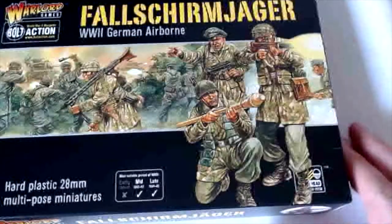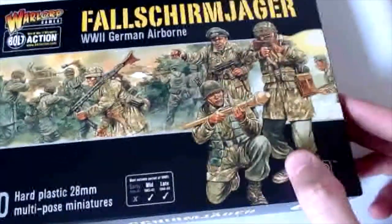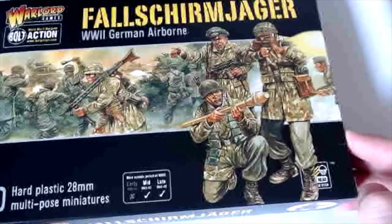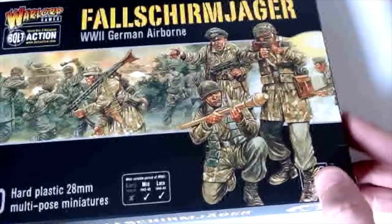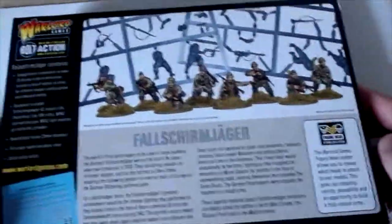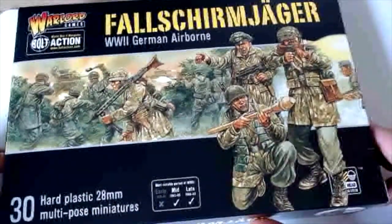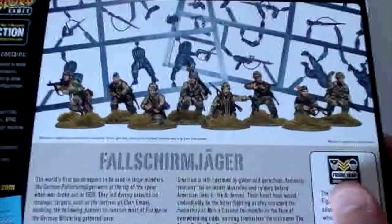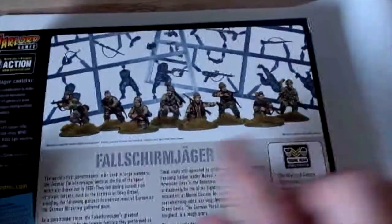Let's get in and start looking at the plastics. The price for these is 27 pounds for 30 miniatures, less than a pound per miniature. Awesome deal. So let's get the cellophane off this so it doesn't reflect off the camera.